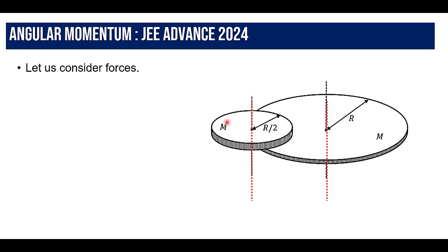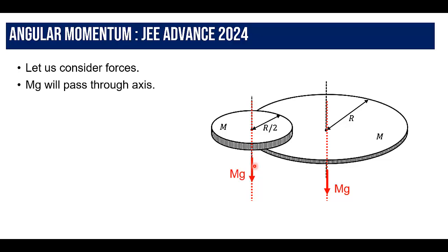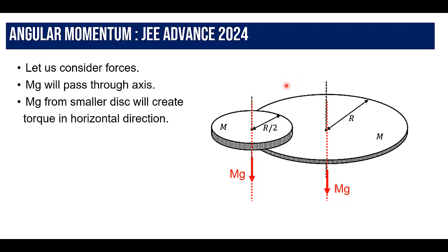To solve this problem, we will use the angular momentum conservation principle. First, let us consider the forces acting. This is a vertical axis, and the disc is fixed on it. The weight mg passes through this axis for the larger disc, and mg also passes through this point for the smaller disc.